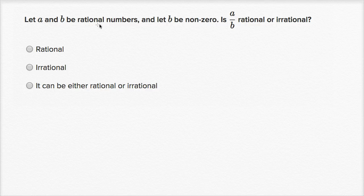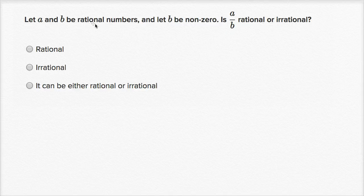We're told let A and B be rational numbers and let B be nonzero. They had to say let B be nonzero because we're about to divide by B. Is A over B rational or irrational? Well, let's think about it. They're both rational numbers, so that means that A, since it's rational, can be expressed as the ratio of two integers.